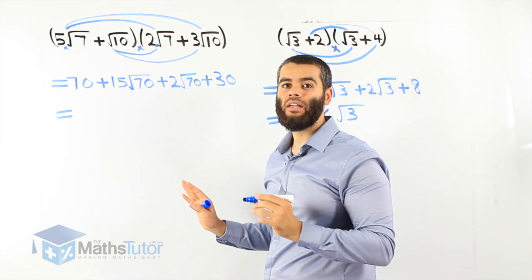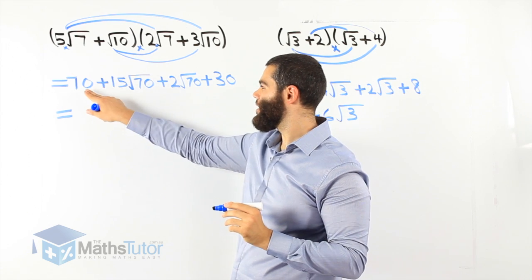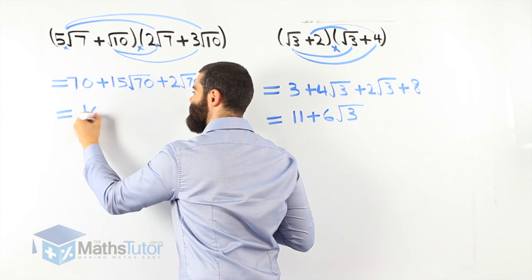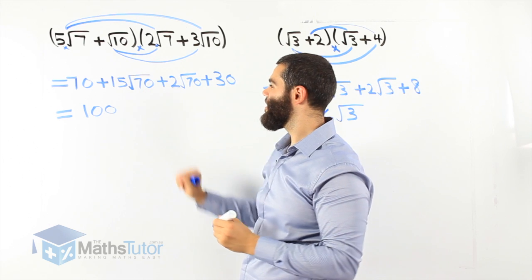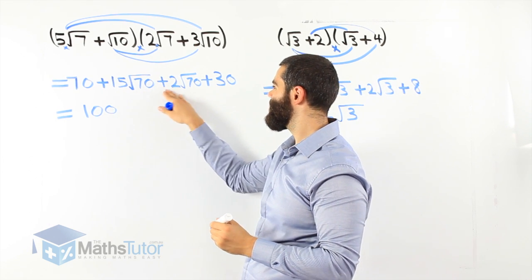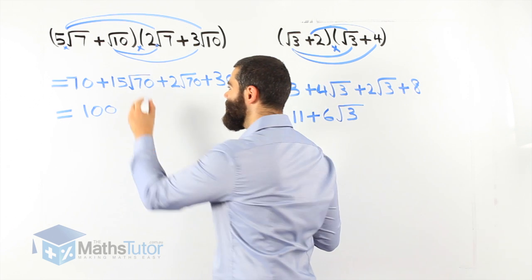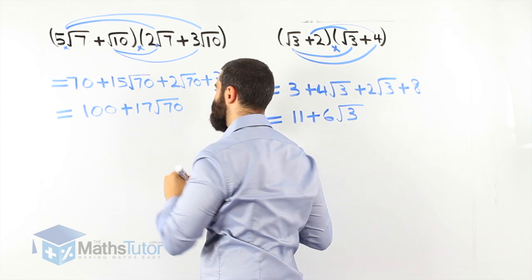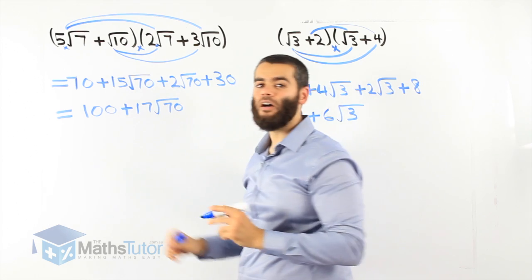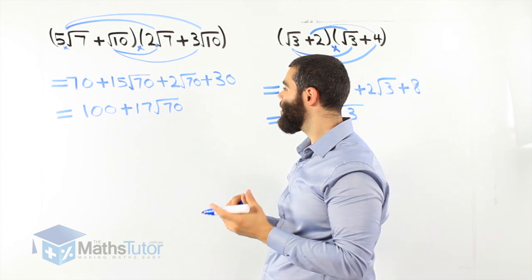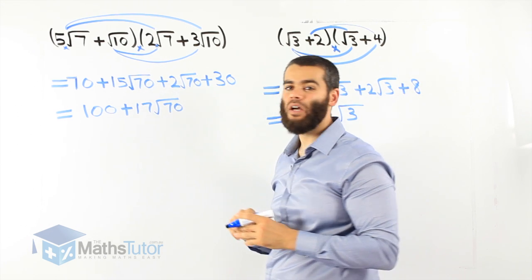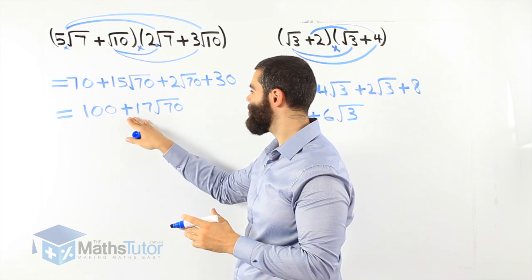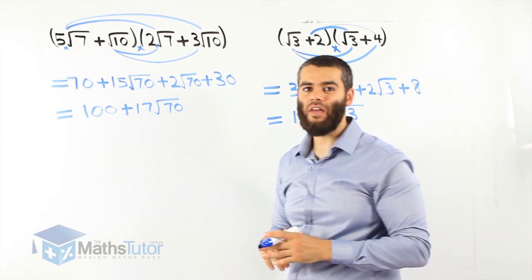Now we collect and see if we can simplify any further. We can — 70 plus 30 is 100. Are these like surds? Yes: 15 root 70 plus 2 root 70 — 15 plus 2 is 17 root 70. We ask can we simplify further? No, we can't, because there are no two numbers that multiply to get 70 as a perfect square. So our final answer is 100 plus 17 root 70.